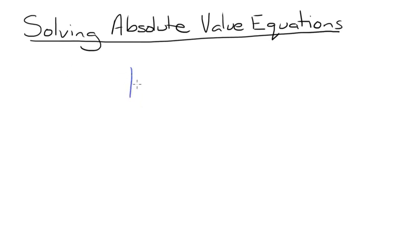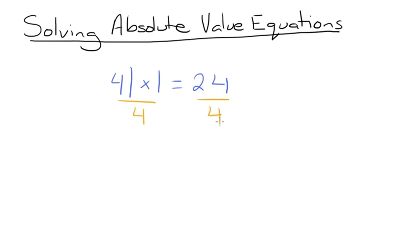The absolute value of x multiplied by 4 is equal to 24. We want to solve this for x. We're going to start by dividing both sides of the equation by 4 in order to isolate our absolute value expression. You always want to isolate your absolute value part first. So when we divide both sides by 4, we'll get the absolute value of x is equal to 6.